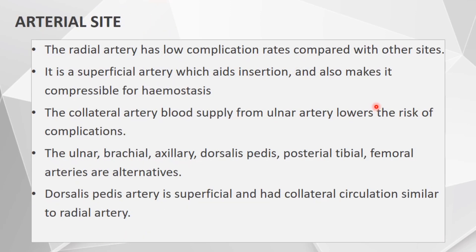Coming to the arterial site. The radial artery has low complication rates and hence is the preferred site for insertion. It is a superficial artery which helps in the insertion and also makes it compressible for hemostasis. It also has collateral blood supply from the ulnar artery, which lowers the risk of complications. Other alternative sites are the ulnar, brachial, axillary, dorsalis pedis, posterior tibial, and femoral arteries. The dorsalis pedis artery is superficial and also has collateral circulation similar to the radial artery.